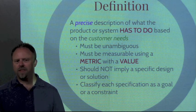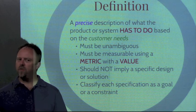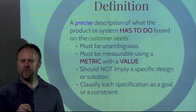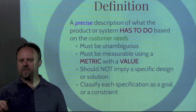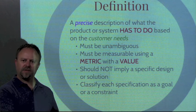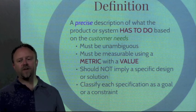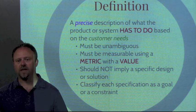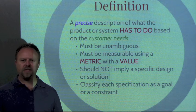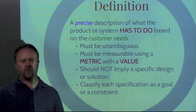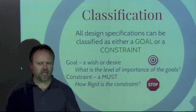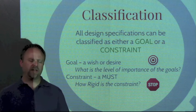We shouldn't imply specific forms that our design should take. We don't want to specify what the design is — we want to specify what is the function that we need to achieve. And then we want to make sure that we're classifying these specs as either goals or constraints. So what are goals and constraints? Let's take a look at those a little bit.